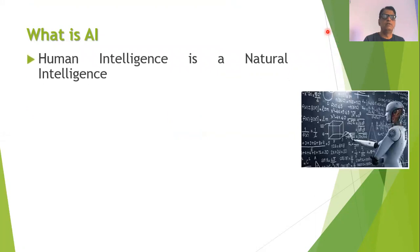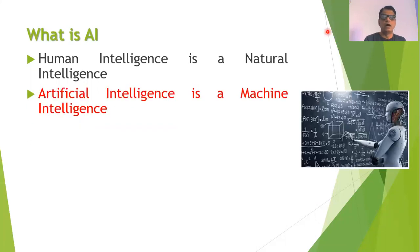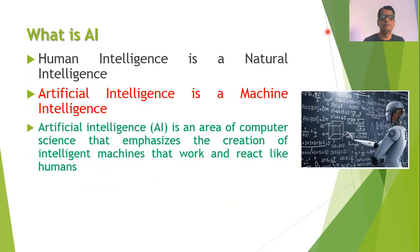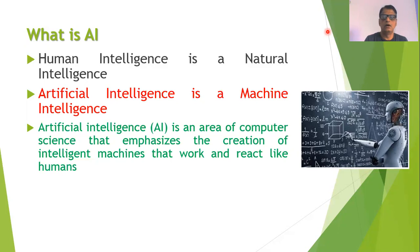Let us understand what is artificial intelligence or AI. We all know that human beings are intelligent and human intelligence is known as natural intelligence. Artificial intelligence is machine intelligence. Our computer machines are digital machines and they are not intelligent, but it is possible to write algorithms to make them intelligent so they behave just like human beings. So broadly, AI is an area of computer science where we create intelligent machines that work or react like human beings.